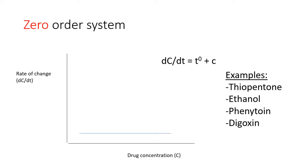Zero-order kinetics, on the other hand, means that when we plot rate of change versus drug concentration, we see an equation with a zero-order exponent, that is, T raised to the zero. T raised to the zero is 1, and therefore the rate of change is a constant.